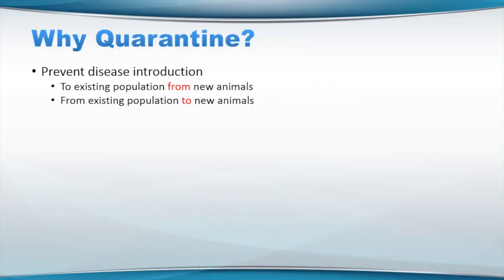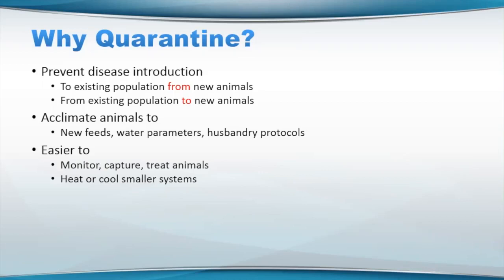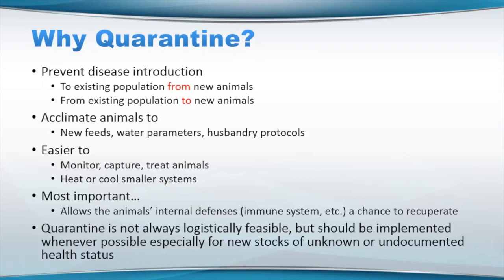So why quarantine? You want to prevent disease introduction to populations that are on your facility from new animals, as well as from the existing population on your facility to the new animals. So it really works both ways — it's not just in one direction. The quarantine will also help new animals get adjusted to potentially new feeds, water parameters, and husbandry protocols. Also, if you can quarantine them rather than putting them into a new large system, it may be easier to monitor, capture, treat, or heat or cool them if you have that ability.